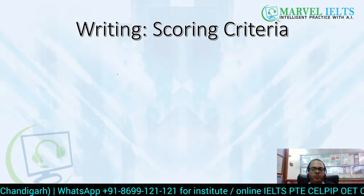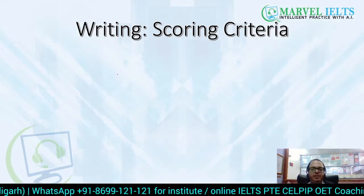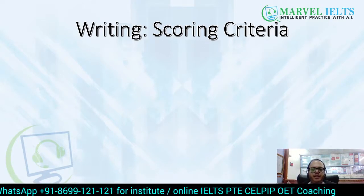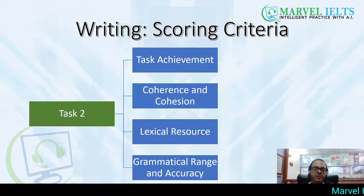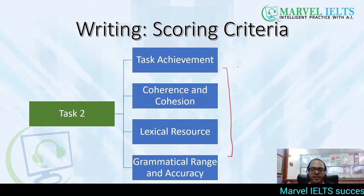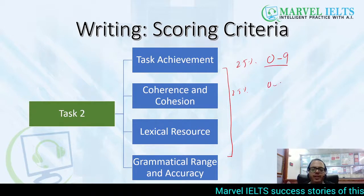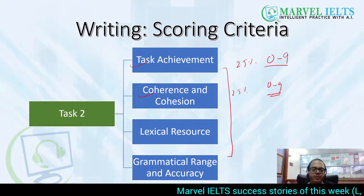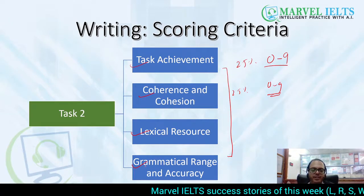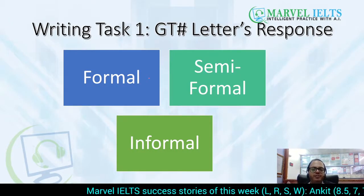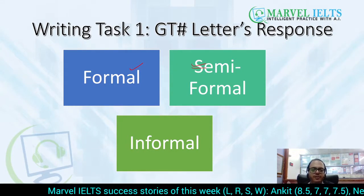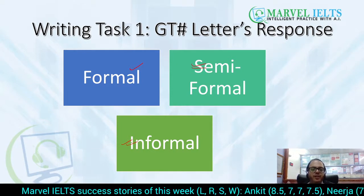Before getting to the task, let's quickly see the scoring criteria. We have discussed the scoring criteria in detail in our Part 1 video of this series where we discussed formal letters. A quick reminder: we have 4 criteria, each worth 25%, and everything is scored from 0 to 9 bands — task achievement, coherence and cohesion, lexical resource, and grammatical range and accuracy. Three kinds of letters we generally get in IELTS: formal, semi-formal, and informal.